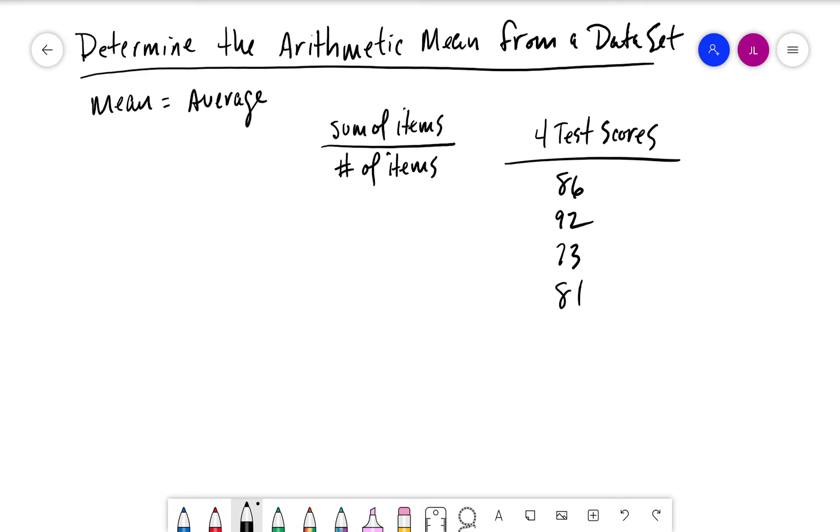If we want to know the mean or the average, what we do is sum all these items up. So we add them all up, so let's see 12, 18, 33, 332. Okay, so that's the sum of the items. Now how many items did we have? We have four.